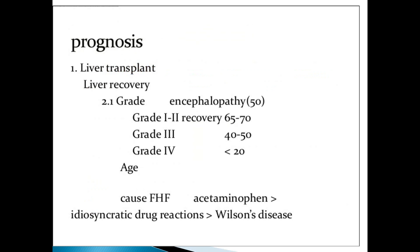Prognosis: liver transplantation is considered in grade 2 or 3. In grade 2 encephalopathy, 50% chance of recovery. Grade 1 to 2 recovery is 65 to 70%. Grade 3: 40 to 50%. Grade 4: less than 20%. Age is a factor — if less than 10 to 15 years, prognosis is good. If more than 60 to 70 years, prognosis is bad. Those who have acetaminophen idiosyncratic reaction should be given acetaminophen poisoning management — it should be treated as a poisoning. Idiosyncratic drug reaction and worsening disease cause fulminant hepatic failure in children.